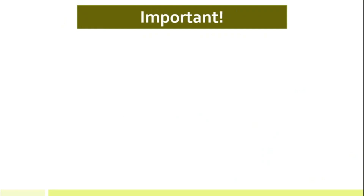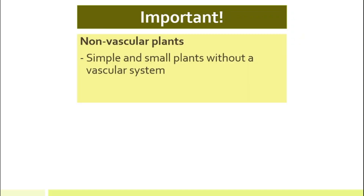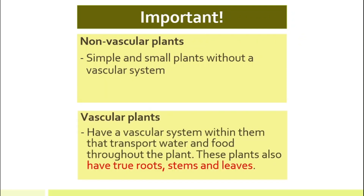Before we look at each group of non-flowering plants, you need to understand two very important words. First, non-vascular plants are very simple and small — they do not have a vascular system. Vascular plants, on the other hand, have a vascular system, which transports water and food throughout the plant. For vascular plants, it is easy to identify the leaves, stems, and roots, but not for non-vascular plants.